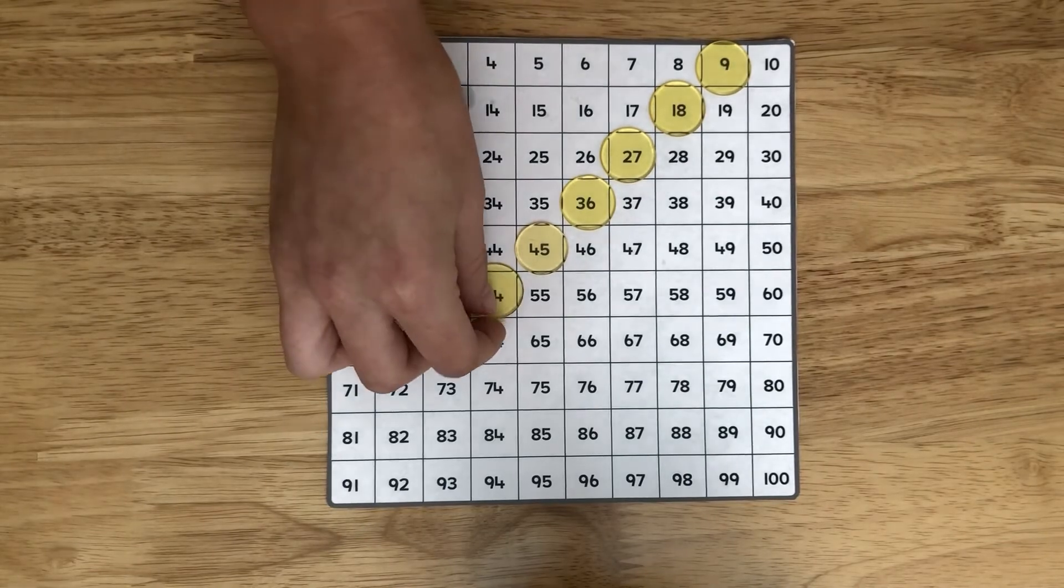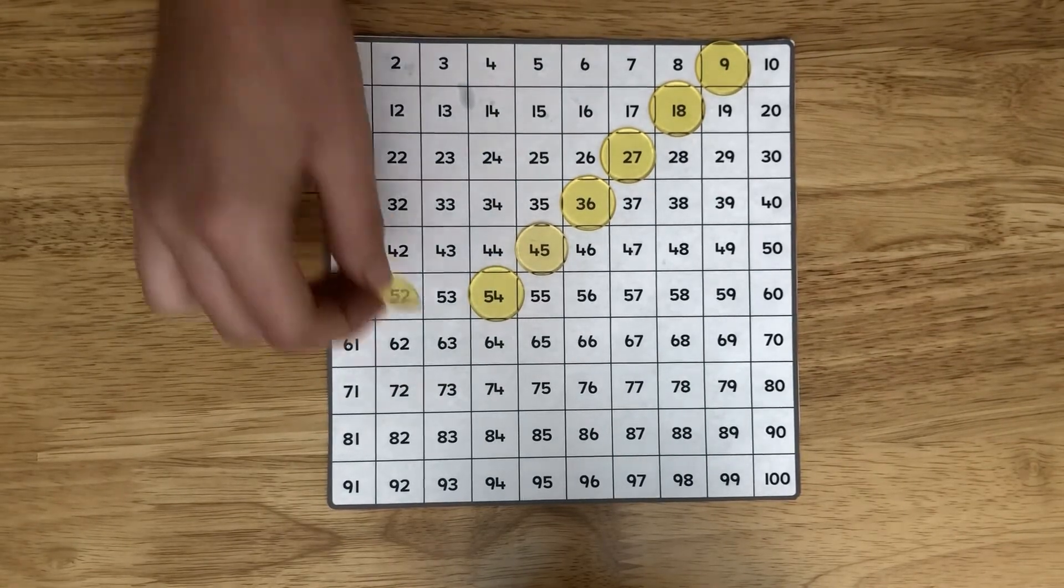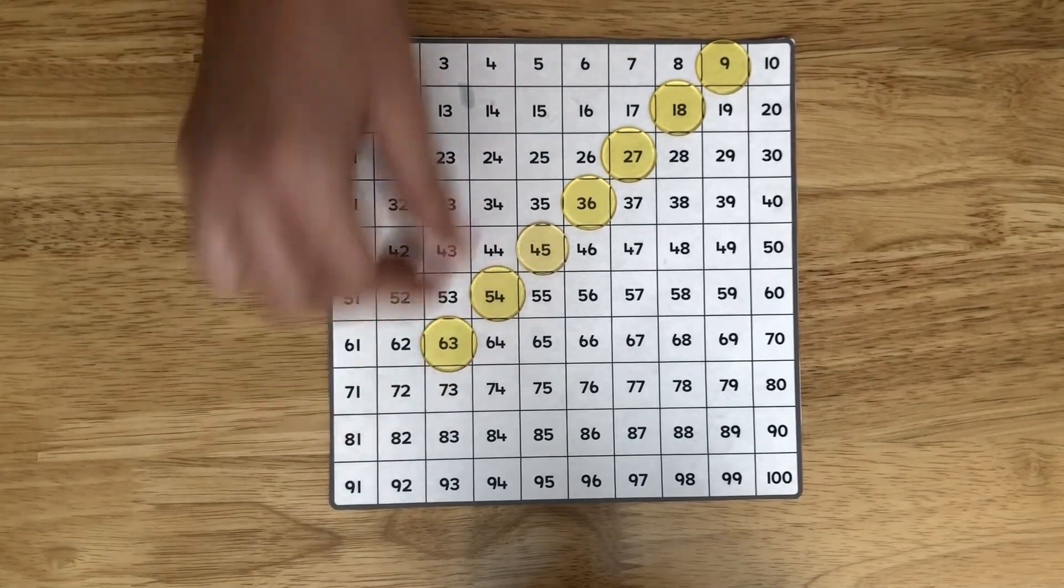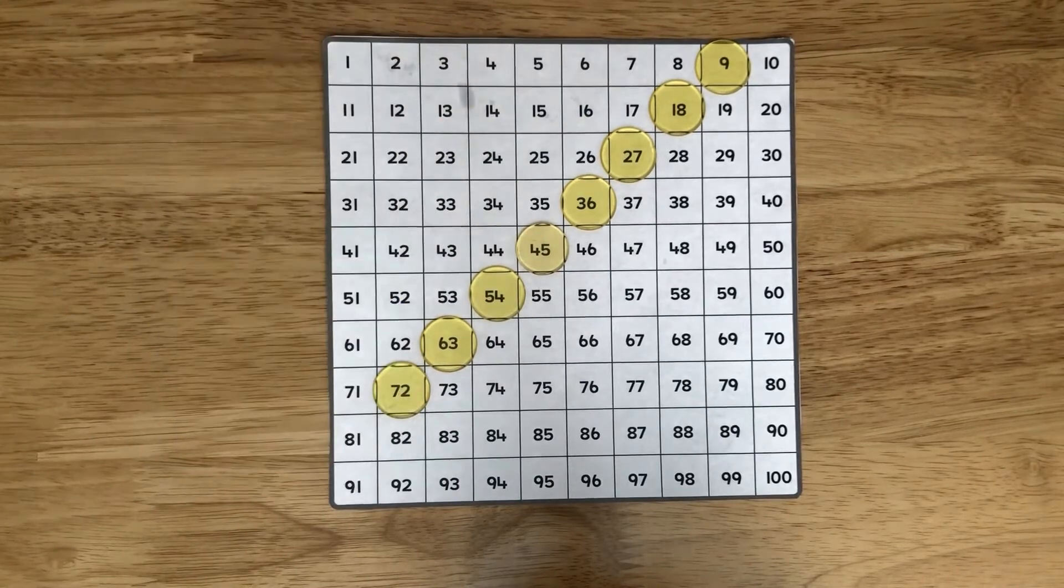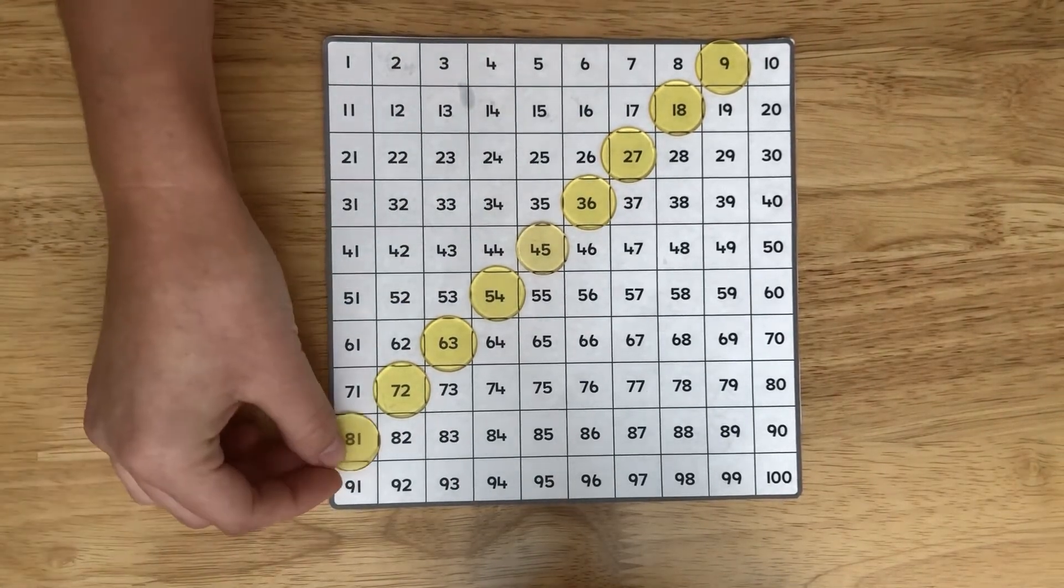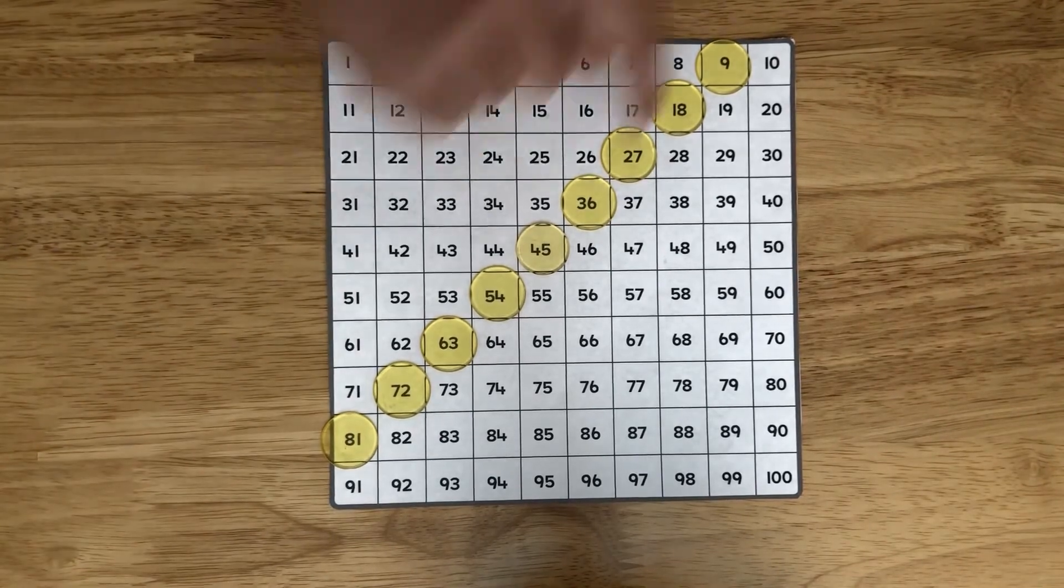Six times nine is 54. Seven times nine is 63. Eight times nine is 72. And nine times nine is 81. Now we have our diagonal line.